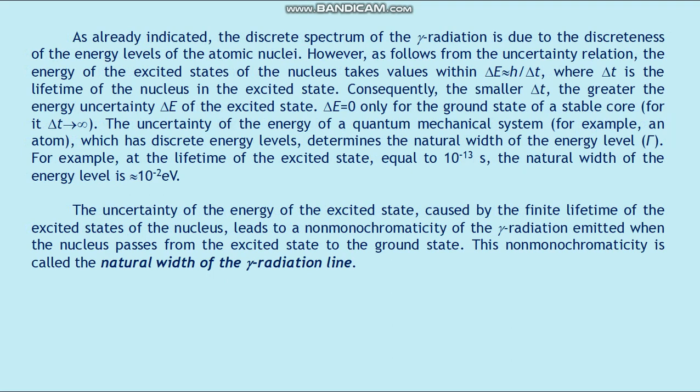The discrete spectrum of gamma radiation is due to the discreteness of the energy levels of atomic nuclei. However, as follows from the uncertainty relation, the energy of the excited states of the nucleus takes values within ΔE ≈ ħ / ΔT, where ΔT is the lifetime of the nucleus in the excited state. Consequently, the smaller ΔT, the greater the energy width ΔE of the excited state. ΔE equals zero only for the ground state of the stable nucleus, for which ΔT tends to infinity.